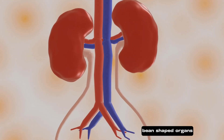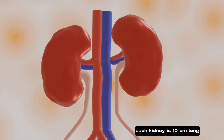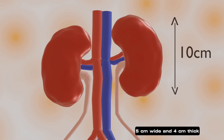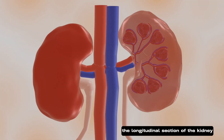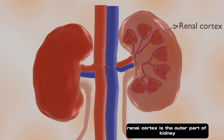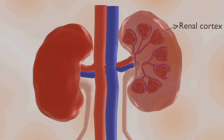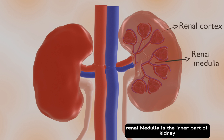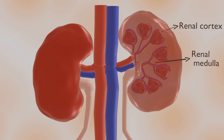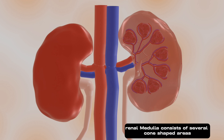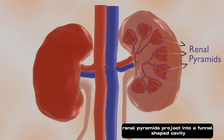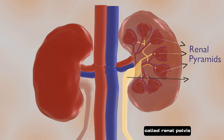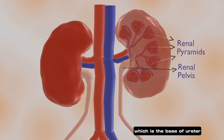Kidneys are dark red, bean-shaped organs. Each kidney is 10 cm long, 5 cm wide, and 4 cm thick. The longitudinal section of the kidney shows two regions. The renal cortex is the outer part of the kidney and is dark red in color. The renal medulla is the inner part of the kidney and is pale red in color. The renal medulla consists of several cone-shaped areas called renal pyramids. Renal pyramids project into a funnel-shaped cavity called the renal pelvis, which is the base of the ureter.